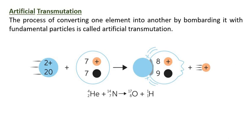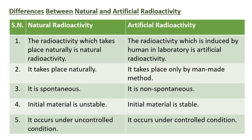Artificial Transmutation: The process of converting one element into another by bombarding it with fundamental particles is called artificial transmutation. Differences between natural and artificial radioactivity: The radioactivity which takes place naturally is natural radioactivity, while the radioactivity which is induced by humans in a laboratory is artificial radioactivity. Natural radioactivity is spontaneous; artificial radioactivity is non-spontaneous.